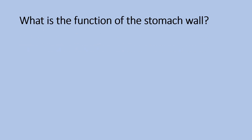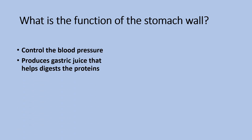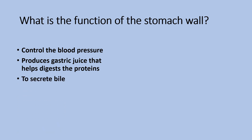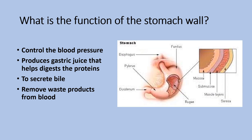Next question: what is the function of the stomach wall? Is it to control blood pressure? Is it to produce gastric juice that helps digest protein? Is it to secrete bile? Or is it to remove waste products from the blood? The answer is to produce gastric juice that helps digest protein.